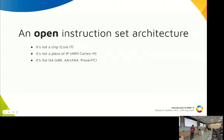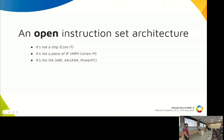What is RISC-V? It's an Open Instruction Set Architecture, known as ISA. It's not a chip like Intel Core i7, and it's not a piece of IP like the ARM Cortex-M. It's an ISA, just like x86, ARM64, which we usually write as AArch64.